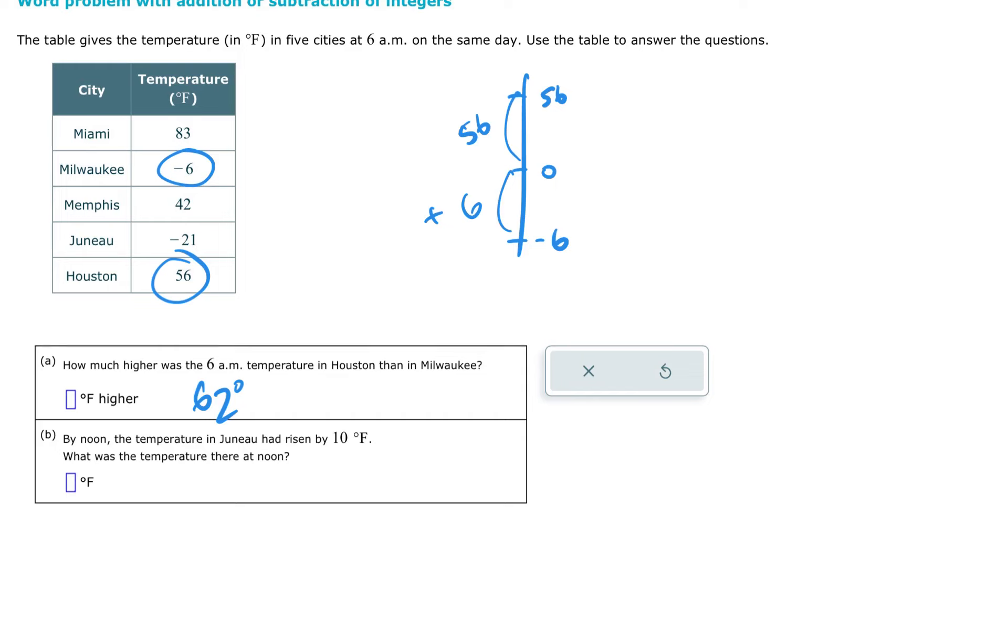Second part says, by noon, the temperature in Juneau had risen by 10 degrees Fahrenheit. What was the temperature there at noon? In Juneau, the temperature at 6 a.m. was negative 21, way down here. But it rose, it went up 10 degrees. We're going to get closer to zero because here's zero. We're going to get closer to zero by 10 degrees. So what we're really doing is negative 21 plus 10, plus 10 degrees.